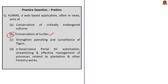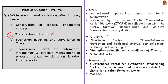In this context, remember that M-Stripes — Monitoring System for Tigers' Intensive Protection and Ecological Status — aims at strengthening patrolling and surveillance of tigers. M-Stripes is launched by the National Tiger Conservation Authority in partnership with the Wildlife Institute of India. Similarly, eGreenWatch is a governance portal for automation, streamlining, and effective management of processes related to plantation and other forestry works, launched by the Ministry of Environment, Forest, and Climate Change.